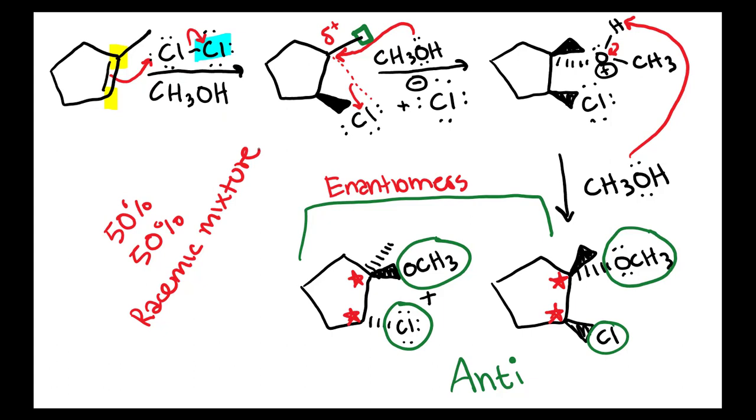And another thing I want you guys to note is that because we have the partial positive sign on the more substituted carbon always, that is going to lead to you having the protic solvent add on to the more substituted carbon. So you'll notice the OCH3 has added on to the more substituted carbon. If you look at the first example we did, the OH added on to the more substituted carbon. And you can hopefully appreciate why that happens by understanding the mechanism.